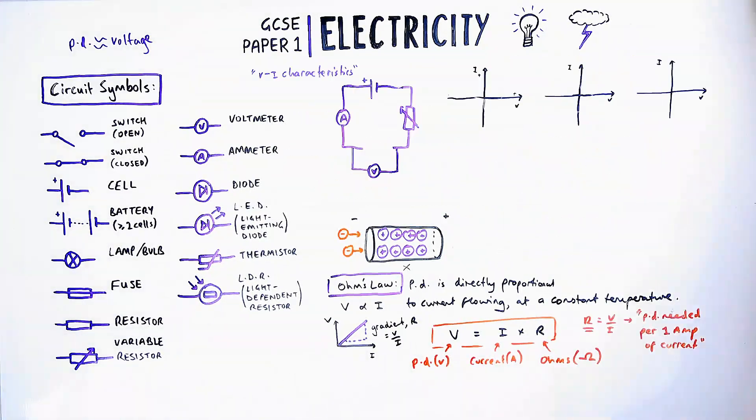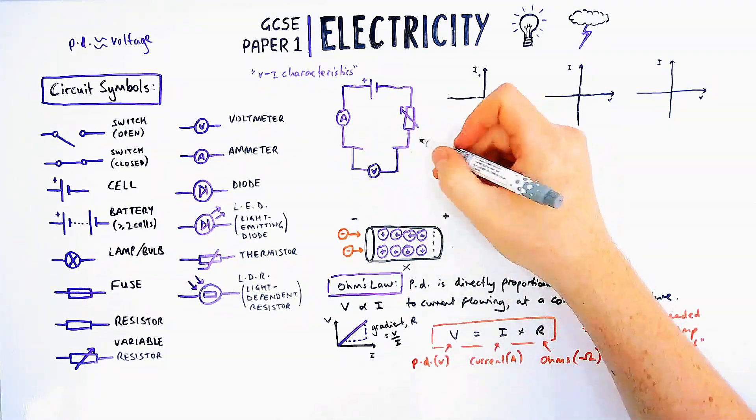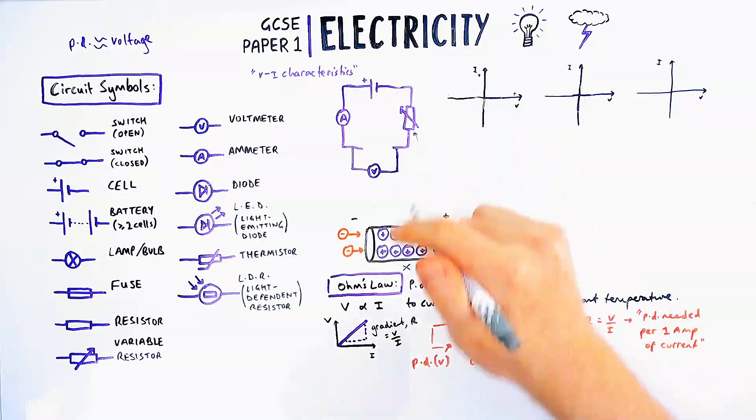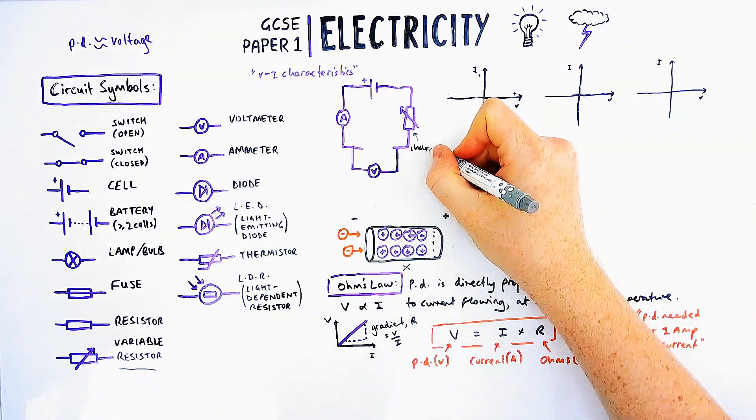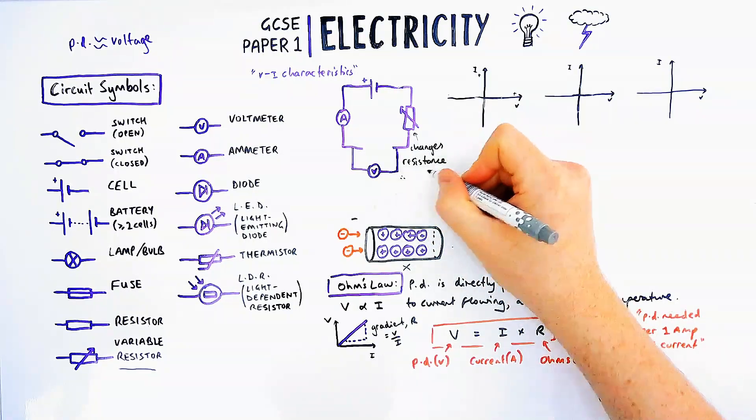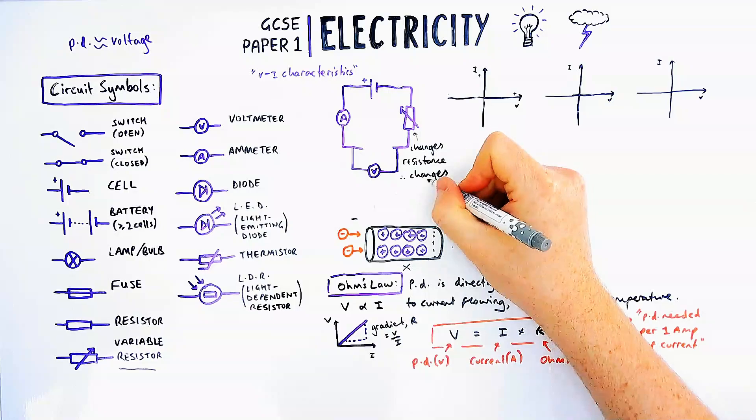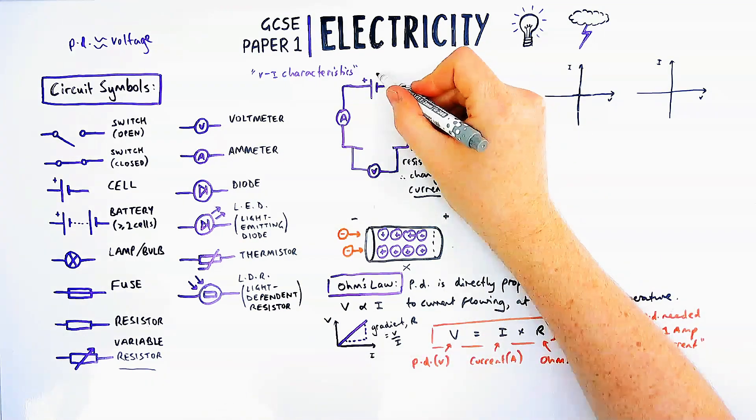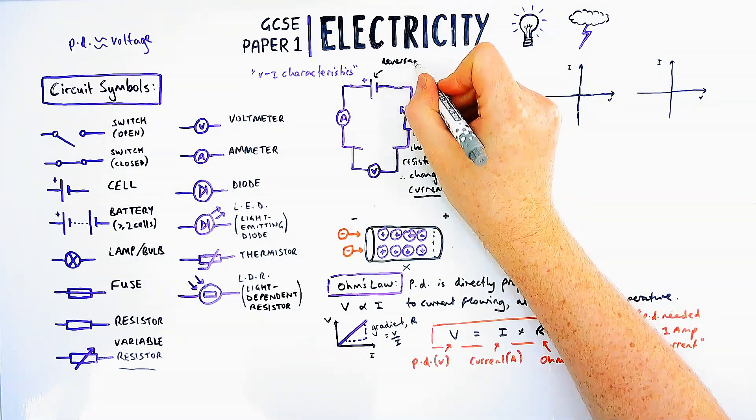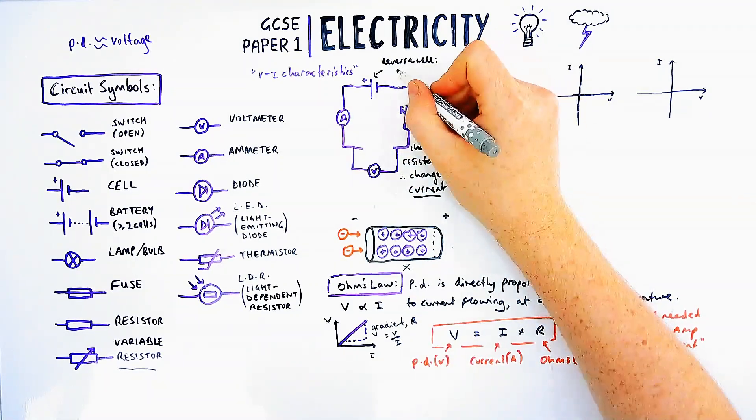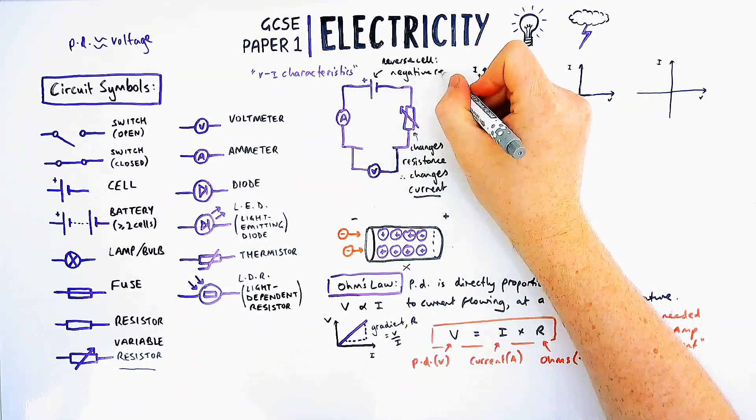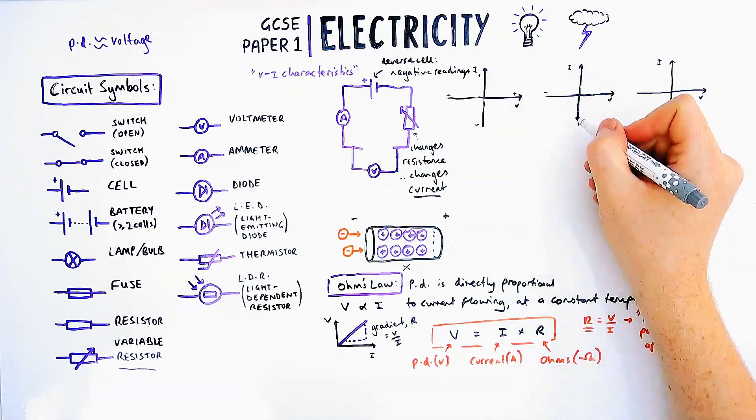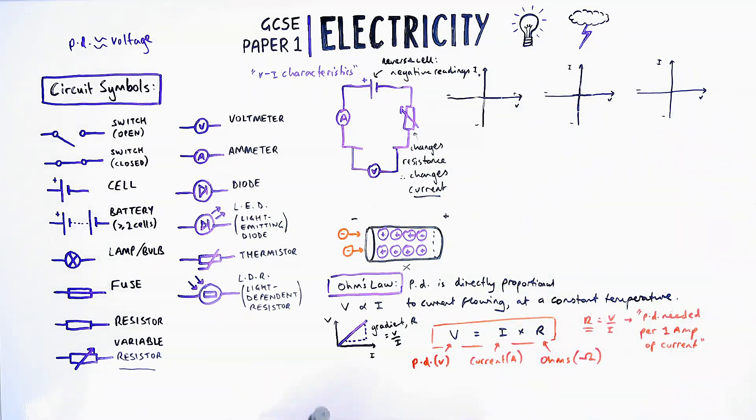To practically investigate these characteristics of how voltage or potential difference and current vary, we need to construct a circuit a bit like this. This is part of the required practical VI characteristics, which I've made a separate video about. In this circuit we've got an ammeter and voltmeter to measure the current and PD. We've also got a variable resistor which changes the resistance in the circuit, which also changes the current and PD. We need to know for three different components what the current-voltage graphs look like. To find out negative readings, we just reverse or flip over the cell.